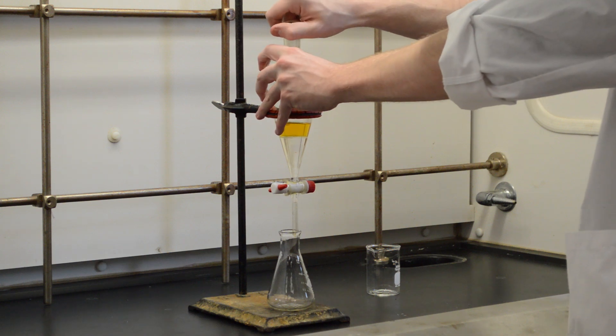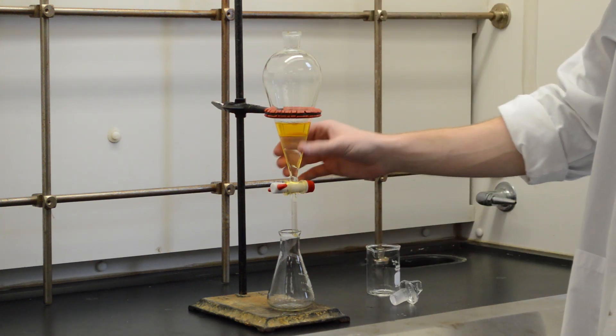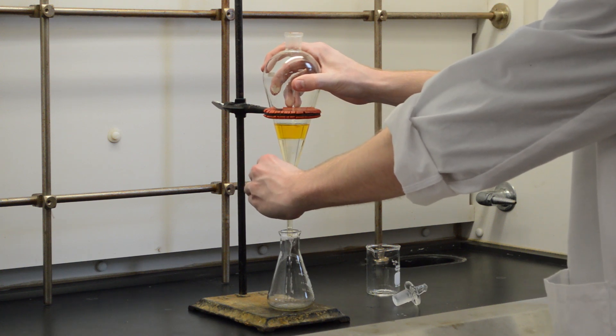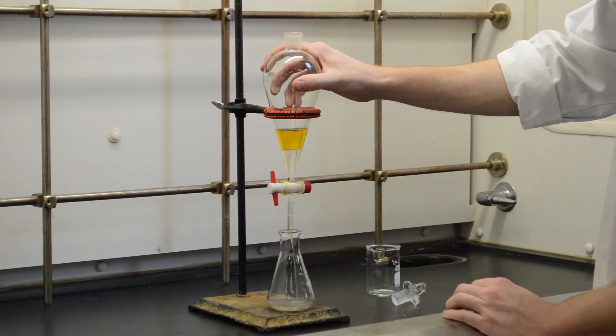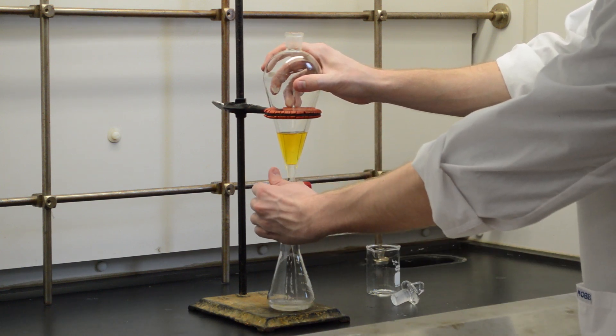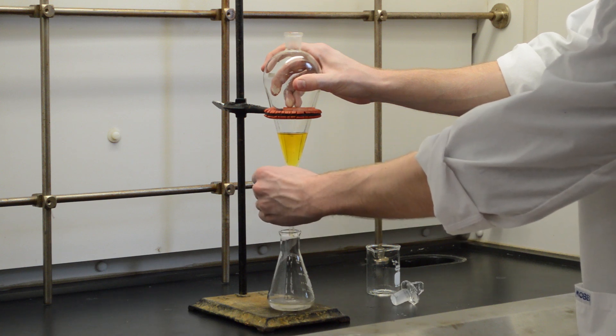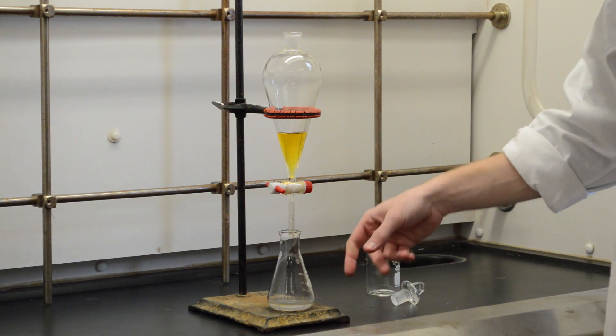Before you start to pour, you want to make sure that your stopper is out so that it will actually come through. Then you can just open this up and that bottom layer will pour right through. You want to be careful that you don't get the water layer as well as the DCM layer. Once that gets pretty close, you can cut it off since you know the product you want is in the bottom.